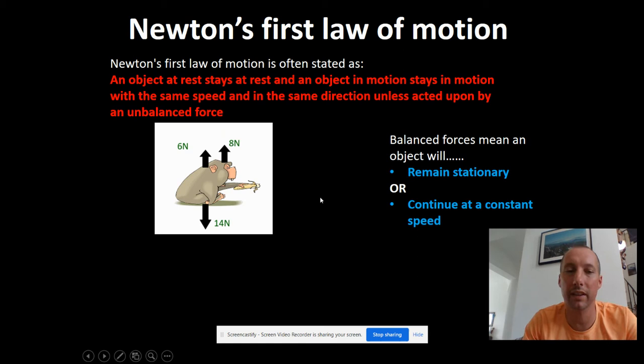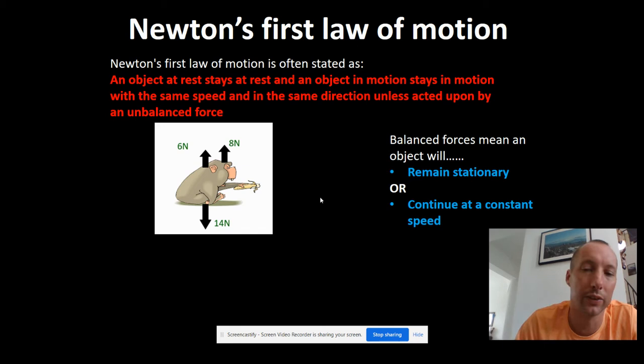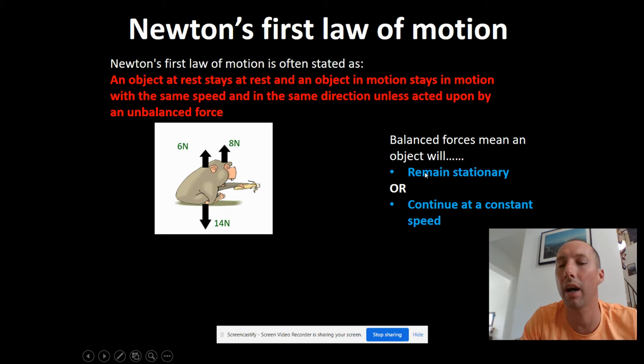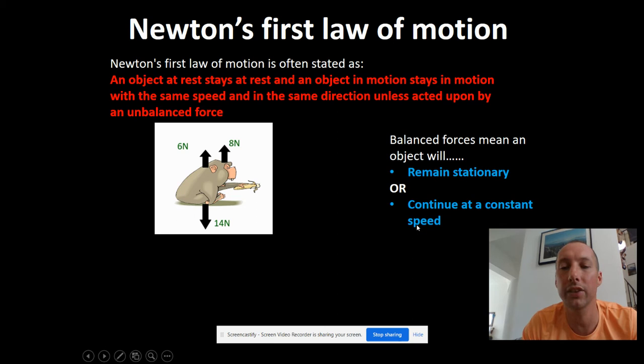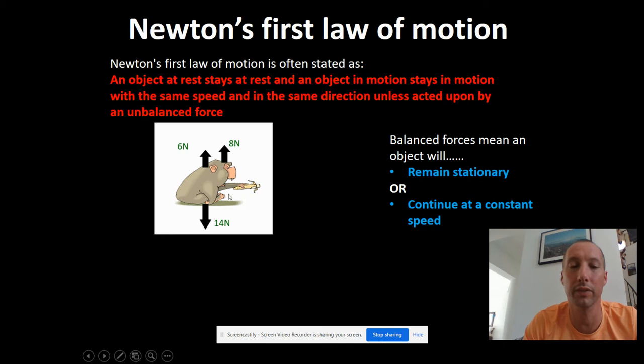Let's go back to that gorilla. It had balanced forces: 14 Newtons up and 14 Newtons down. But we don't really know how it's going to move - we know it will either remain stationary or continue at a constant speed. To work out which, we need more information. Those words 'remain' and 'continue' mean it keeps doing whatever it was doing before the forces became balanced. If it was stationary before, it remains stationary; if it was moving before, it continues at a constant speed.